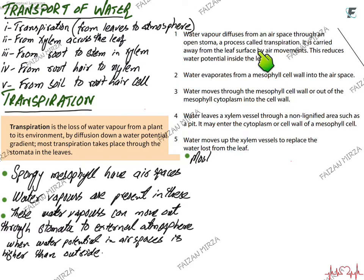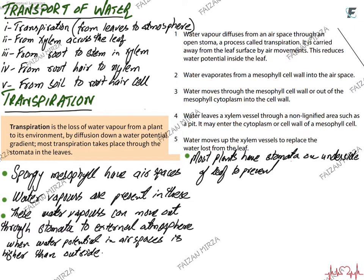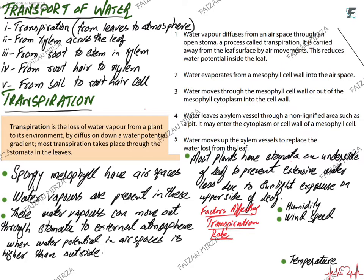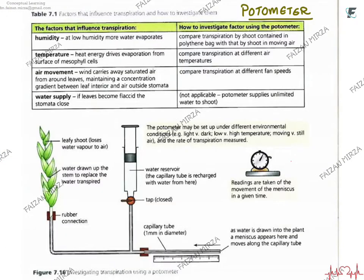Most transpiration takes place through stomata in the leaves. We do not use the term concentration of water molecules here. Most plants have stomata on the underside or lower surface of the leaf, which allows water to go out as vapors. If stomata were on the upper surface, there would be extensive water loss due to direct exposure to sunlight. Factors which affect the rate of transpiration include humidity in the air, wind speed around the plant, light intensity, dry conditions, and temperature outside the plant.